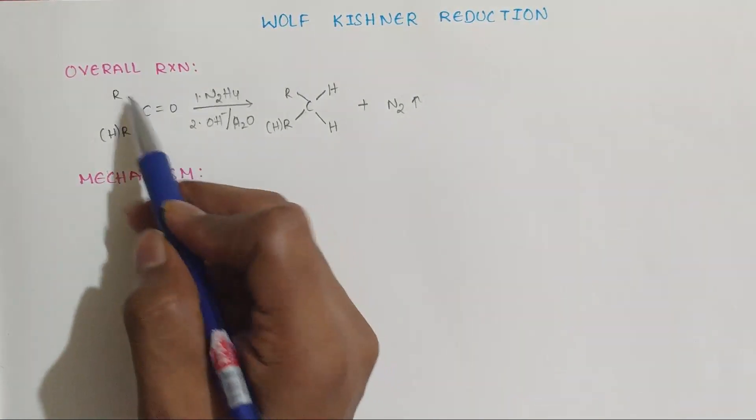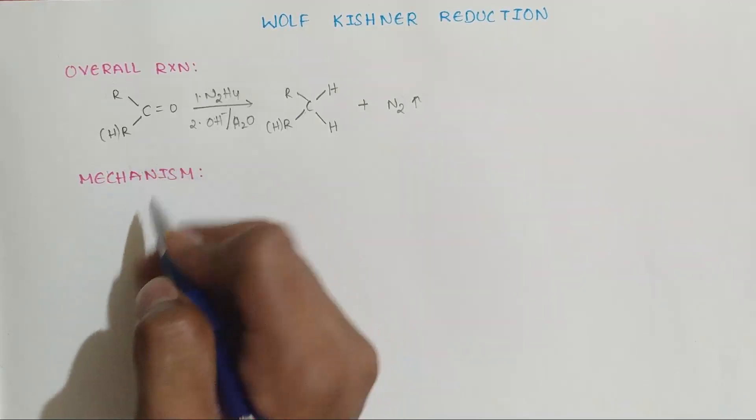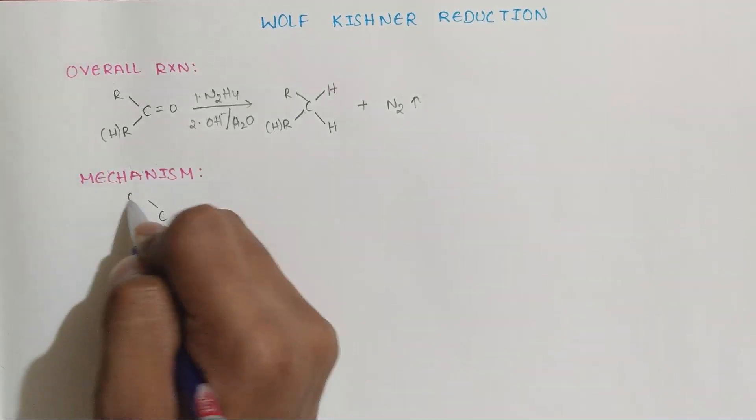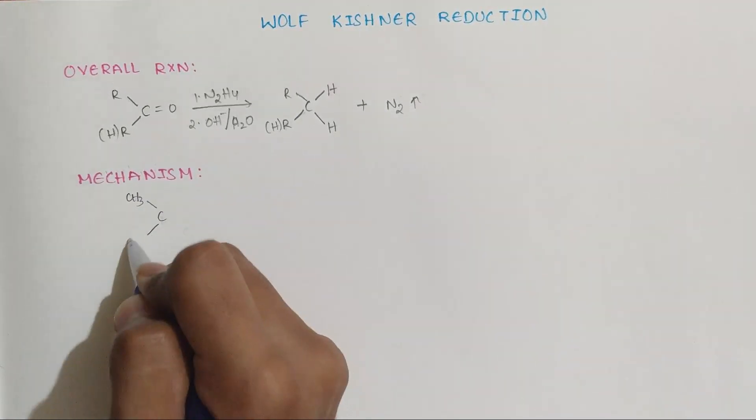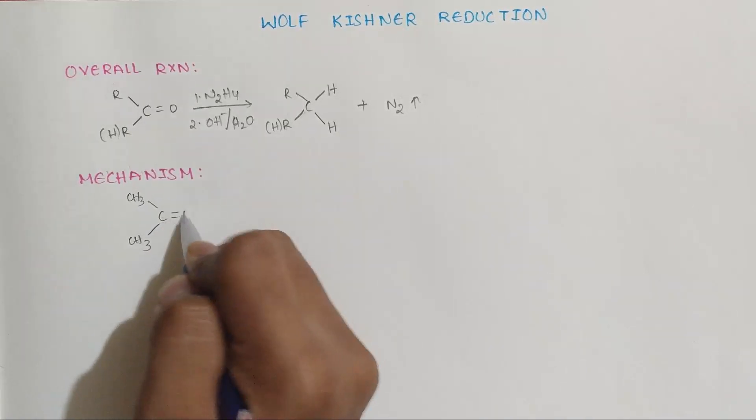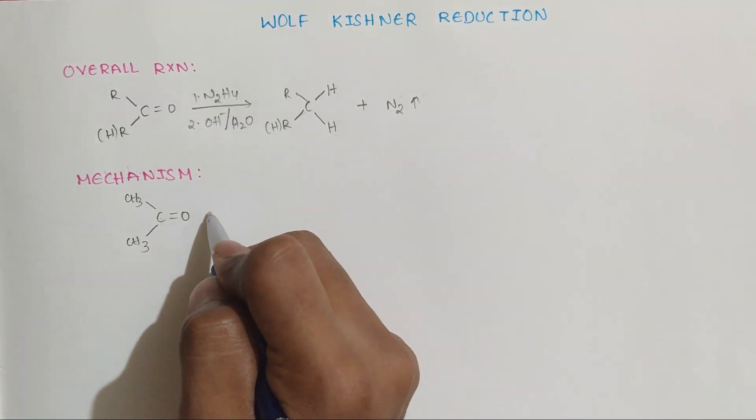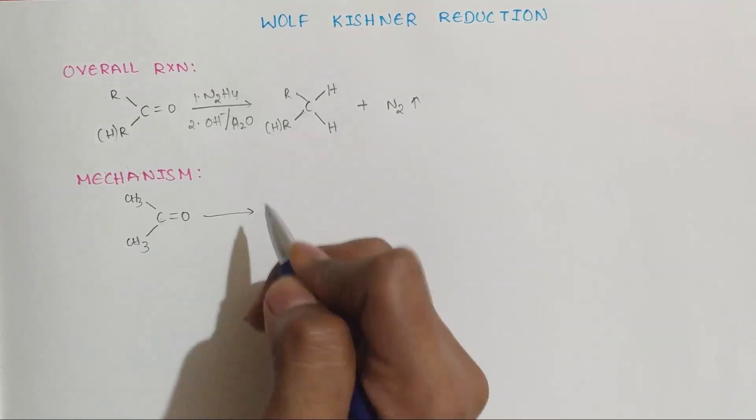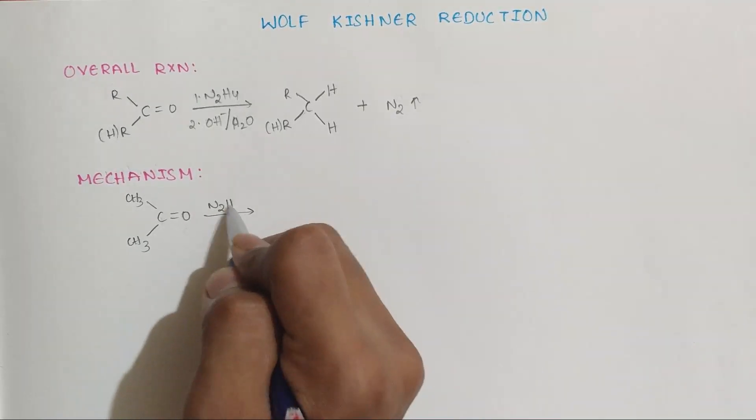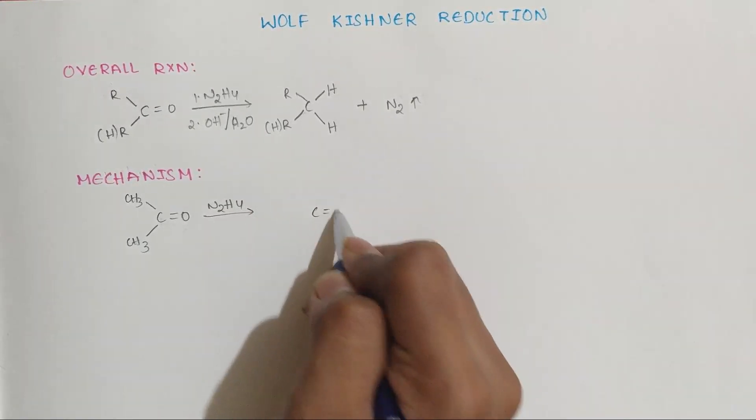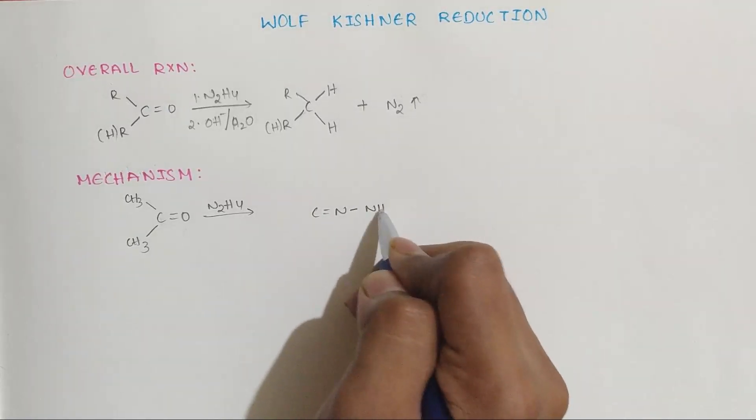Now let us see the mechanism. First with N2H4, it converts to C double bond N single bond NH2.